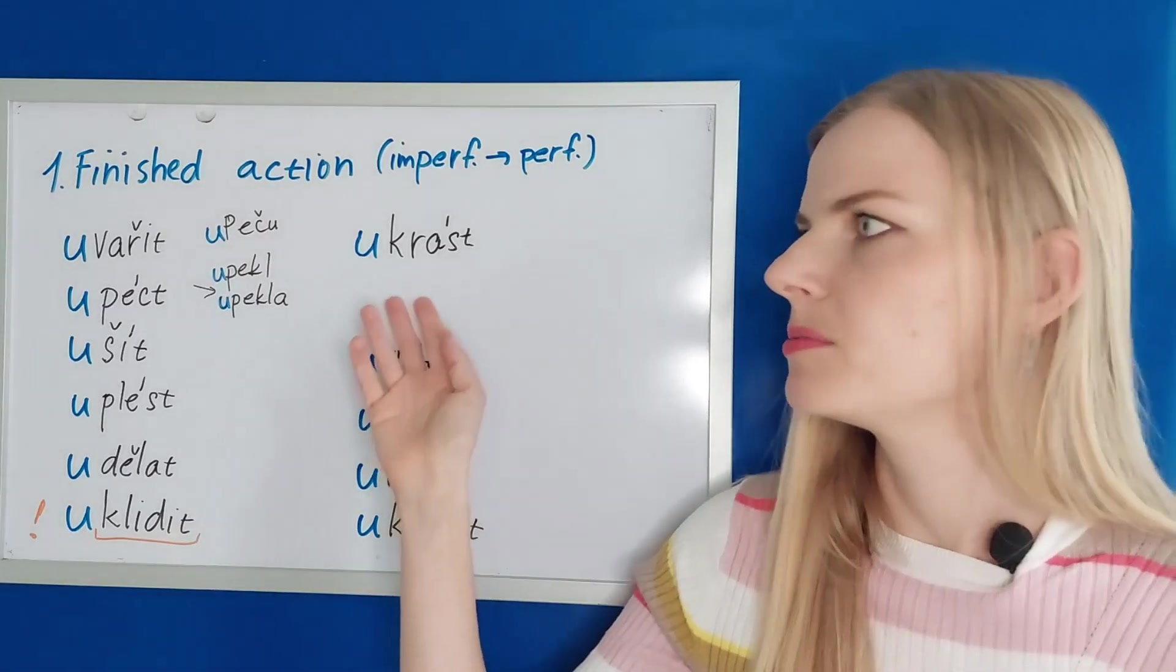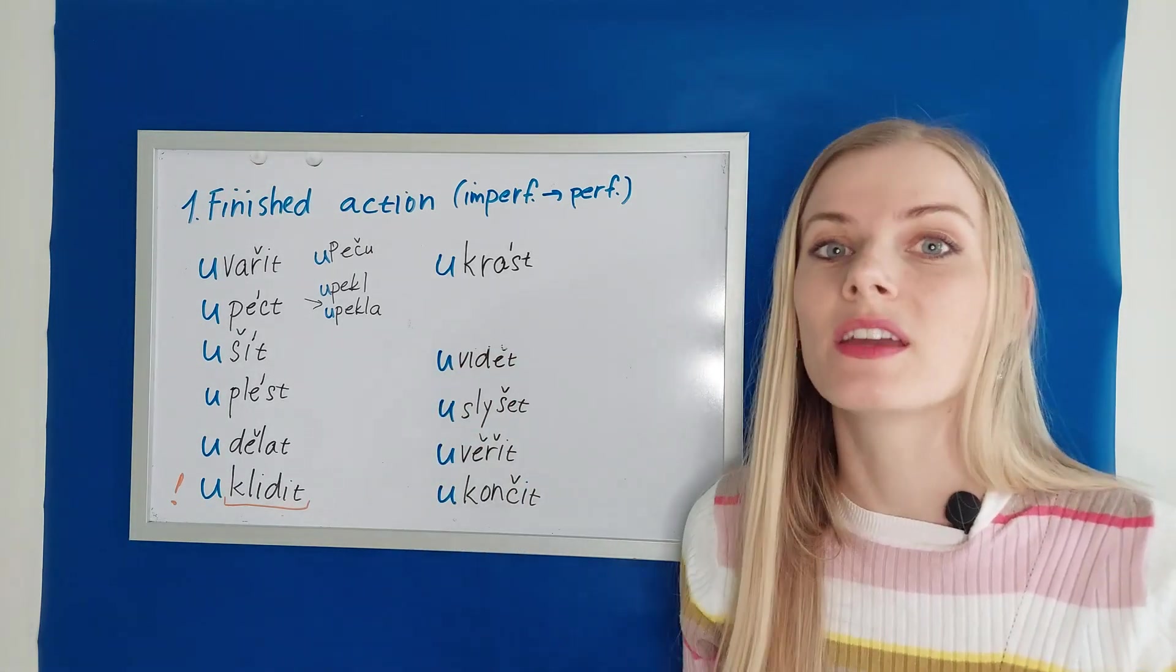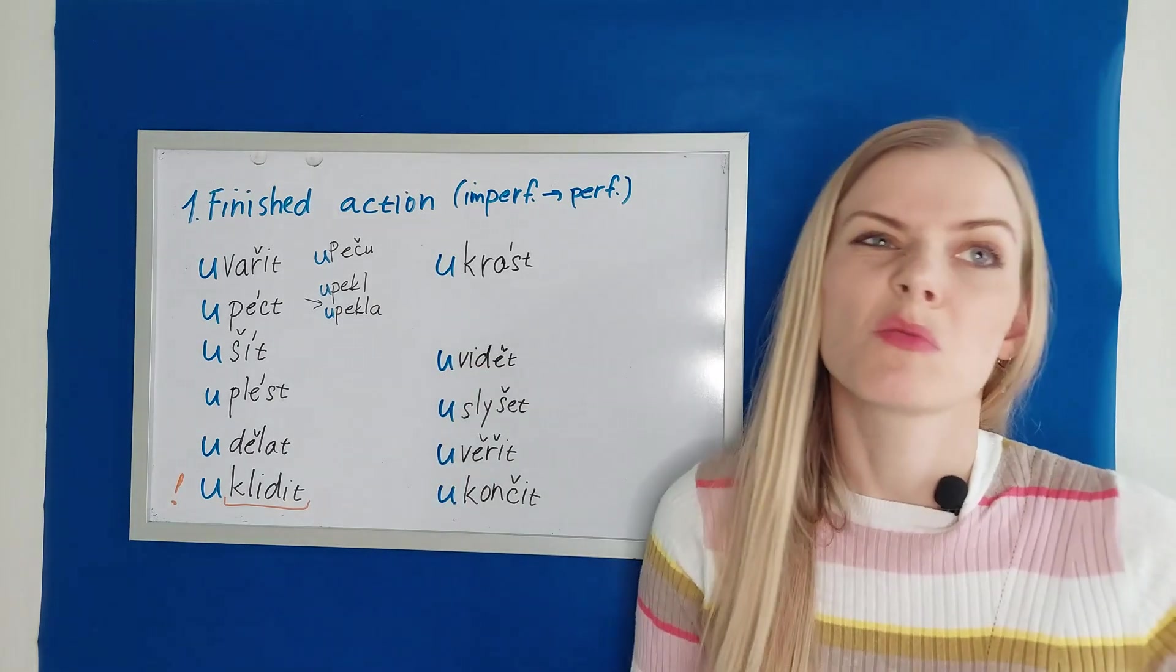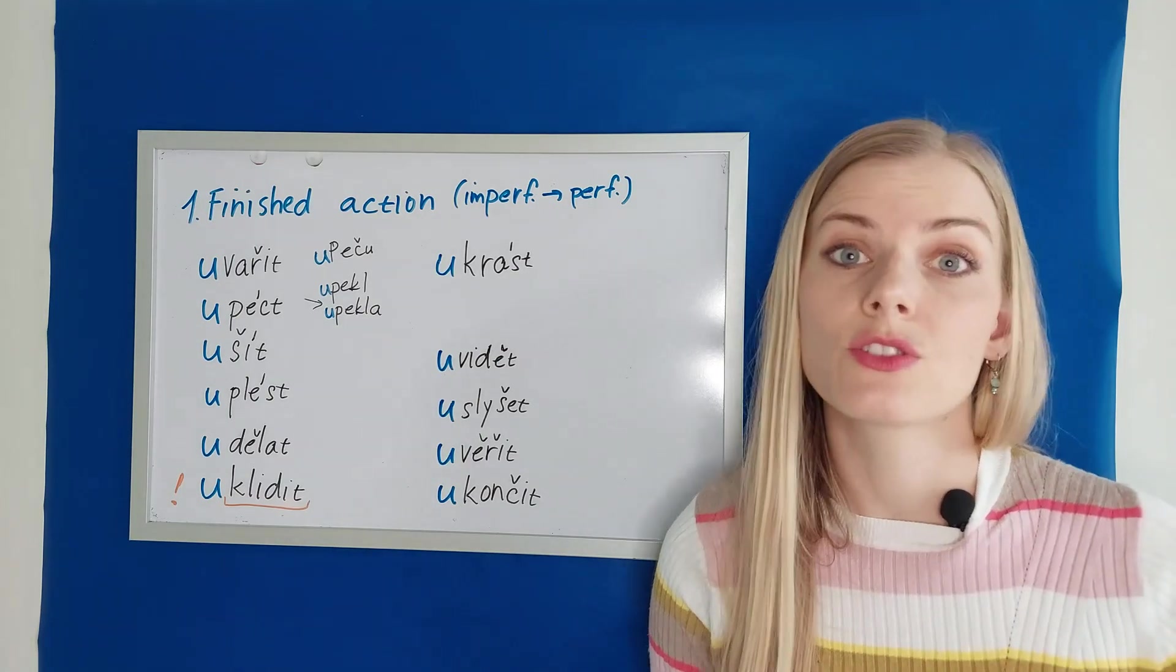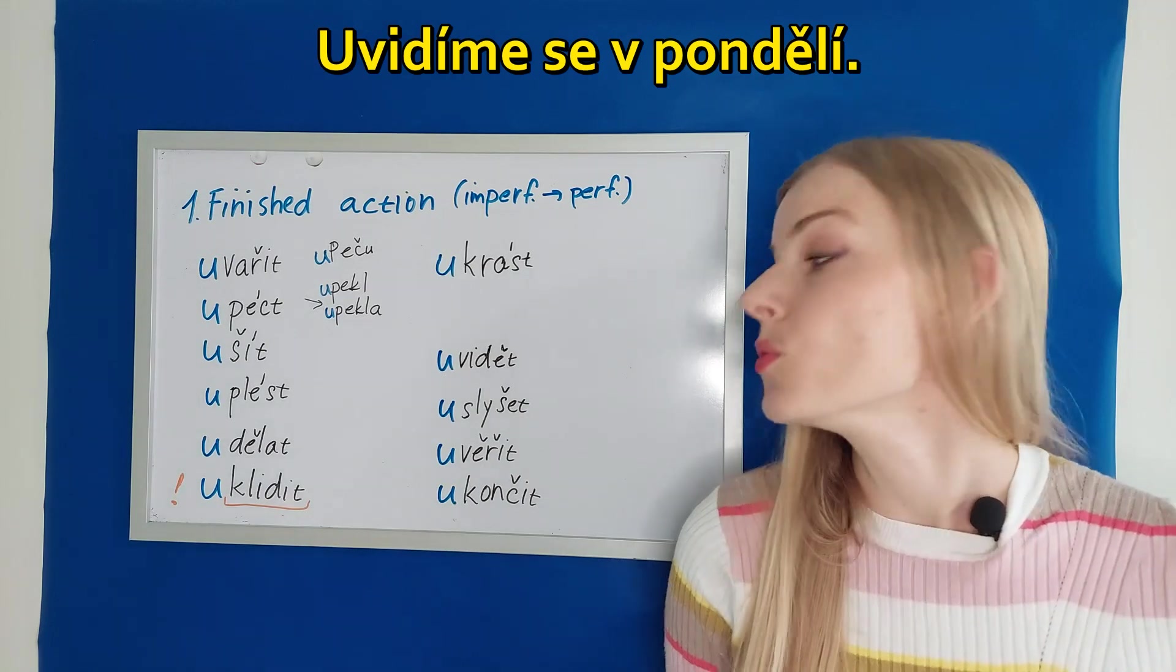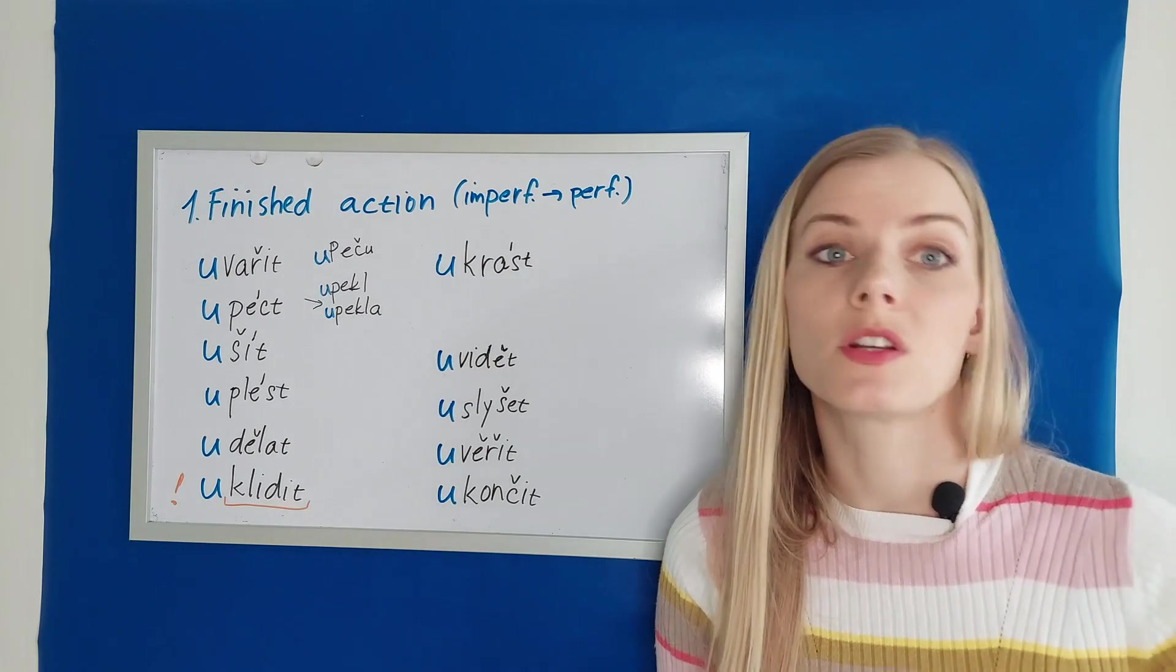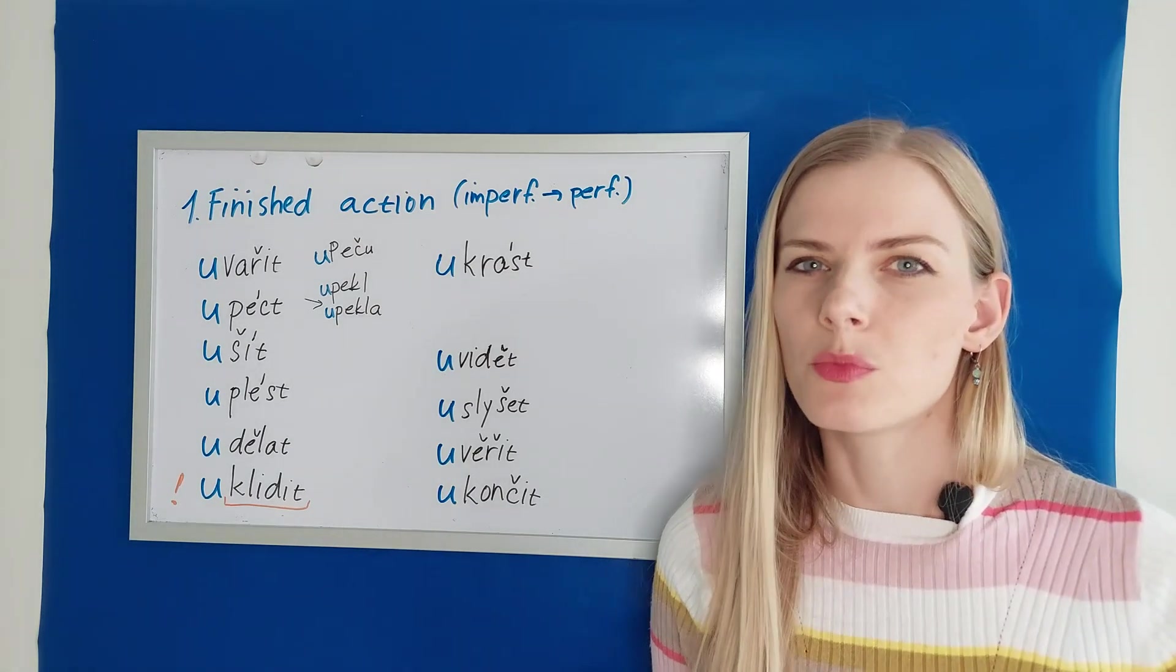You might have noticed that I erased one verb. It's because I realized that this verb unést, which means to kidnap or carry away, will be better in the following category. Uvidět to see. Vidět to see is imperfective. Uvidět to see. When you want to say we will see, you'll say uvidíme. You don't say budeme vidět. And it's the same way if you want to say we will see each other on Monday. Uvidíme se v pondělí. In the story, we had a sentence. Myslela jsem, že to neuvidíš. I thought that you would not see it.